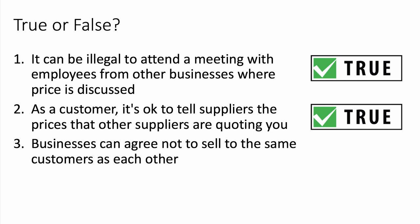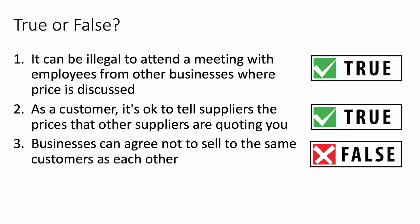Statement three: businesses can agree not to sell to the same customers as each other. This is false — businesses cannot agree to share the market. That is a form of collusion and is illegal under EU and UK competition law.